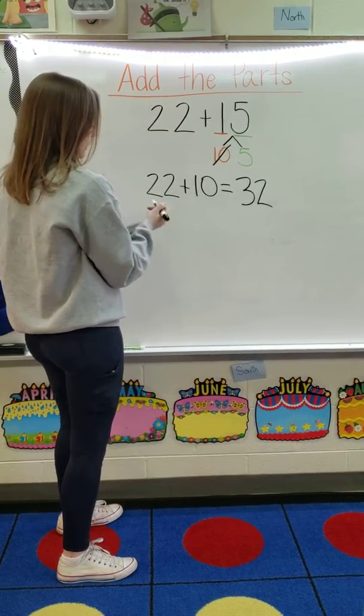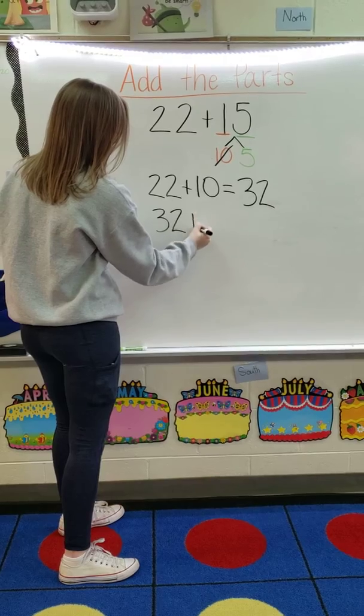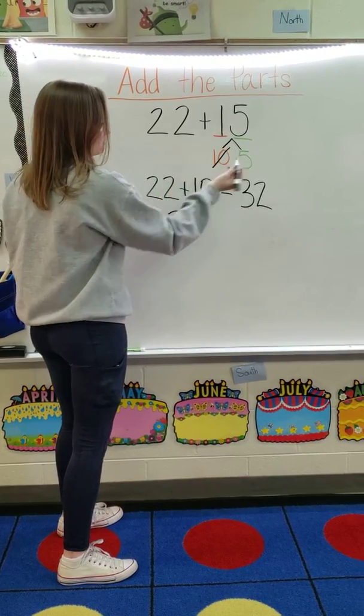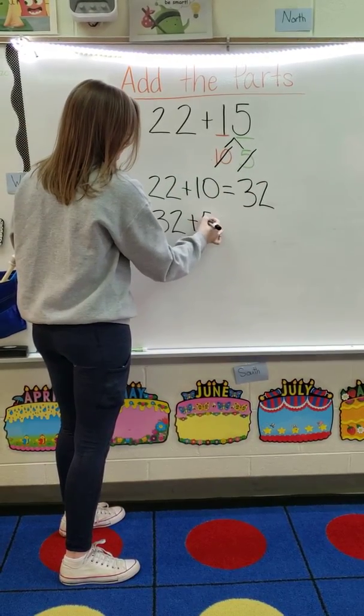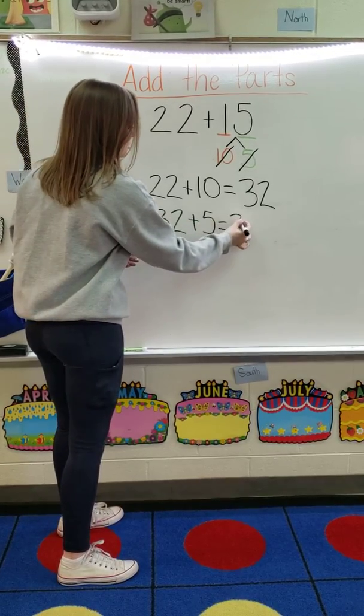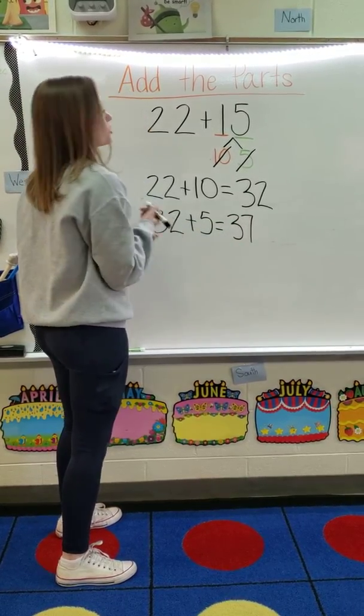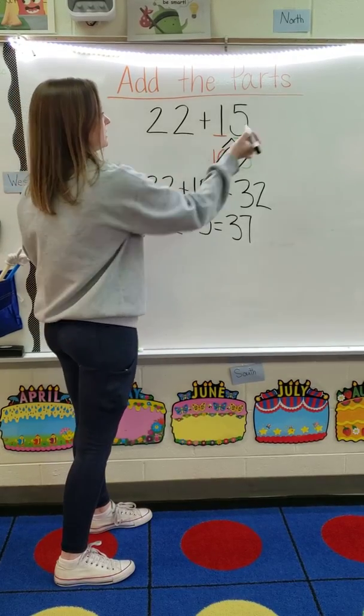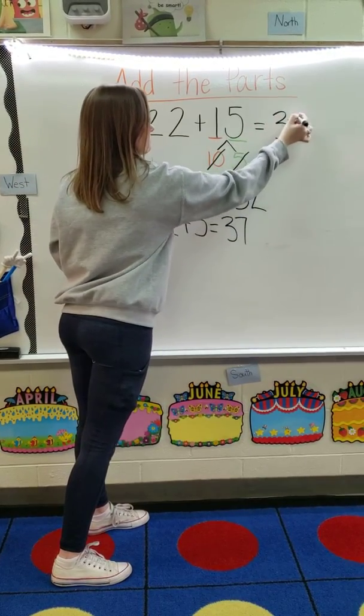My next step is I'm going to take my 32 and I'm going to add my 5. So 32 plus 5 equals 37. Now I know 22 plus 15 equals 37.